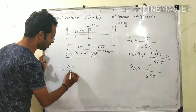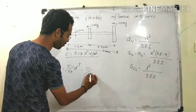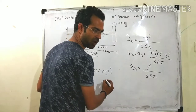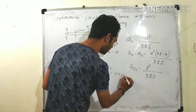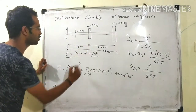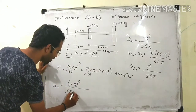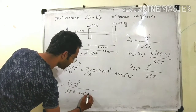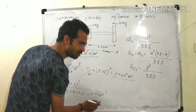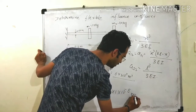Moment of inertia I equals pi by 64 multiplied by D to the power 4, for a circular bar. Here D is given as 0.05 meter. Putting in the values: I = pi/64 × (0.05)^4, which gives 6.4 × 10⁻⁷ meter⁴. Now A11 = (0.2)³ divided by 3 × E × I, where E = 2.1 × 10¹¹ and I = 6.4 × 10⁻⁷. Solving this gives A11 = 4.1 × 10⁻⁸ meter per newton.